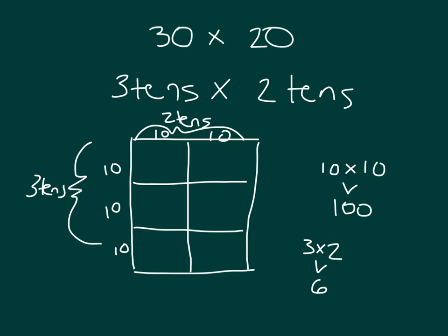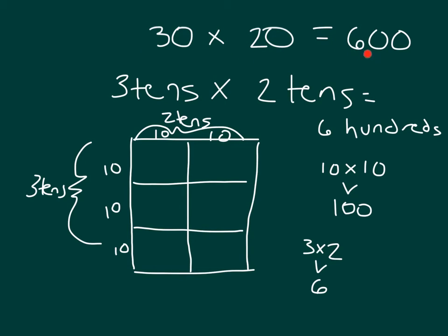How many hundreds is that? There's six hundreds. Three tens times two tens is six hundreds. How do we write six hundreds in standard form? Six, zero, zero. So 30 times 20 is equal to 600. In unit form, that's six hundreds. This here is the area model.